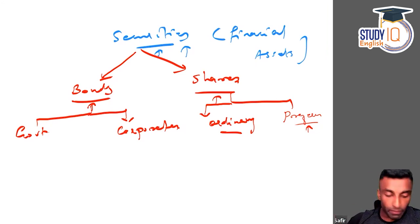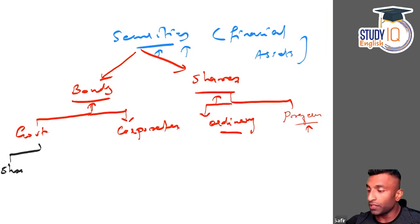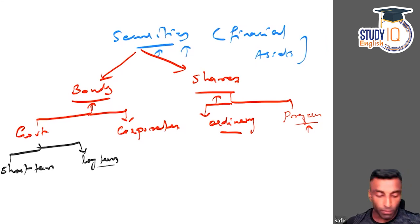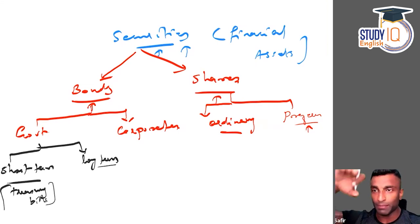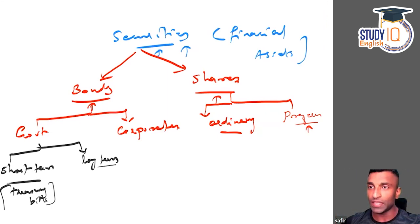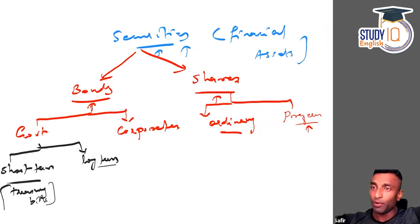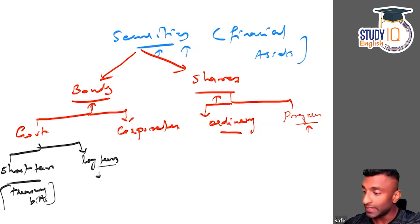When we talk about government bonds, we have two types: short-term and long-term. The short-term bonds are treasury bills, and the long-term bonds are what you call dated securities.